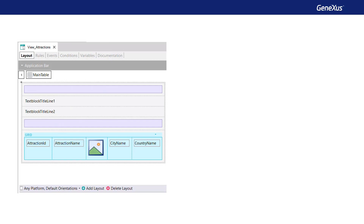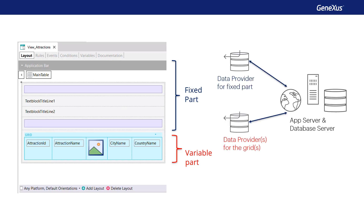As we saw before, a panel has a fixed part where the form controls that don't belong to a grid are located. It also has one or more variable parts, one for each grid found in the panel. To load the data in each part of the panel, GeneXus will automatically generate a data provider for each part that will be in charge of obtaining the data from the database. As these data providers are independent, each one will have its own navigation, so each part of the panel — fixed or variable — will have its own base table that will be independent of the others.